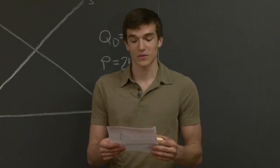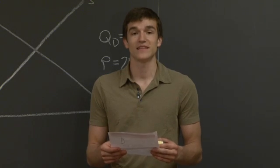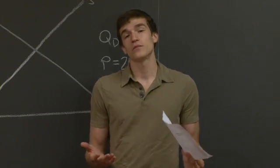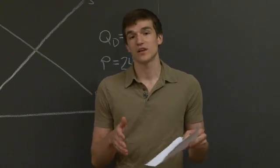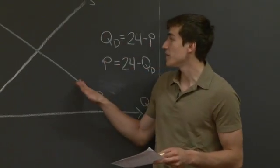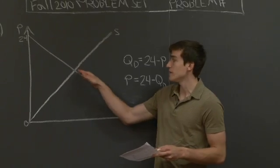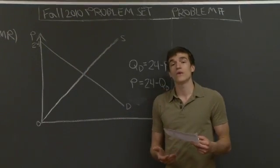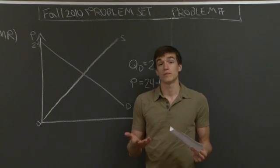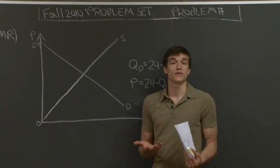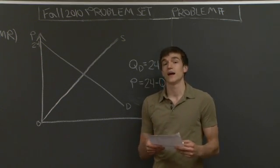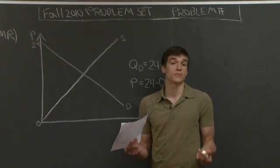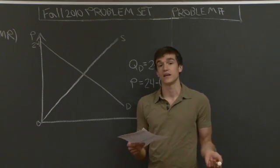Today we're going to do Fall 2010, PSET 6, Problem Number 4. For this problem, we're going to shift away from what we've usually been talking about, where we're dealing with a straight equilibrium setting the demand curve equal to the supply curve. Now we're going to think about what happens when the supplier has market power, when they're the only competitor in the market, and they can decide how much quantity they want to produce without worrying about other producers coming in.